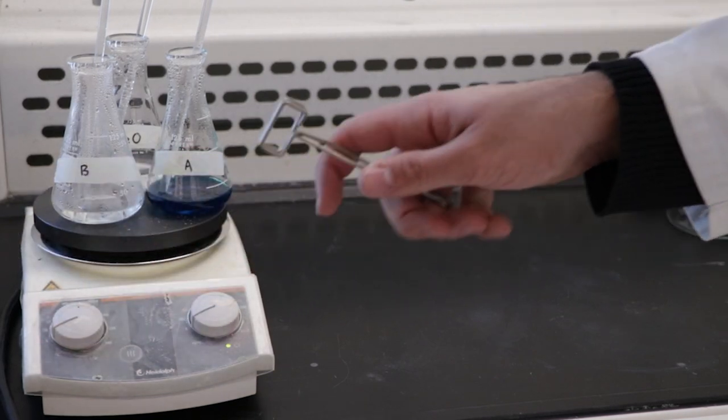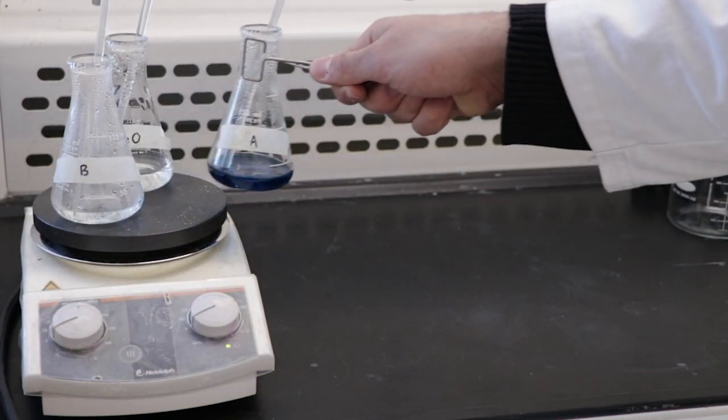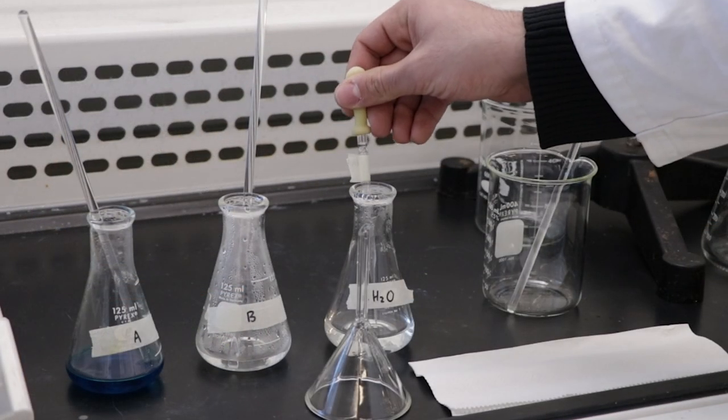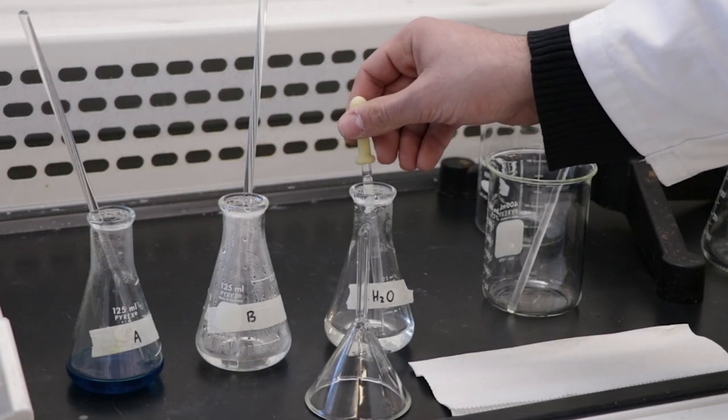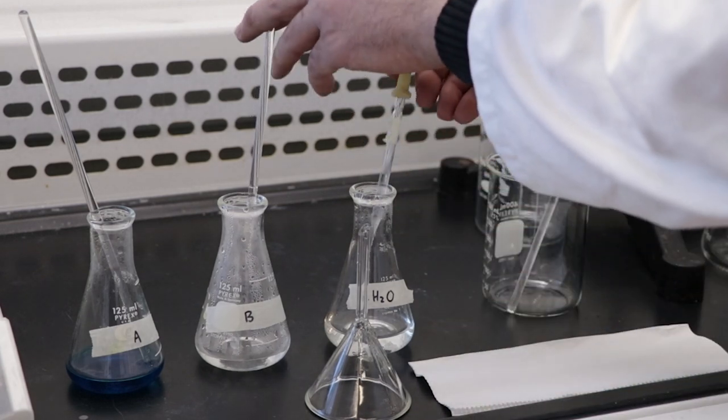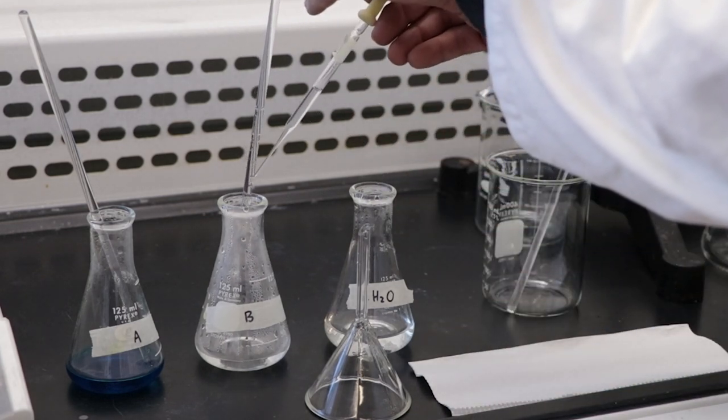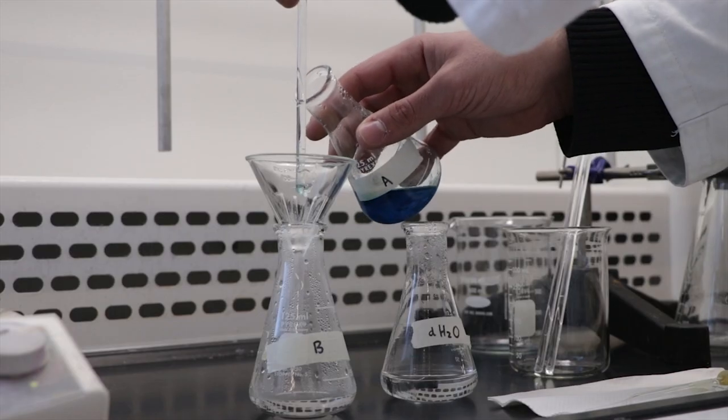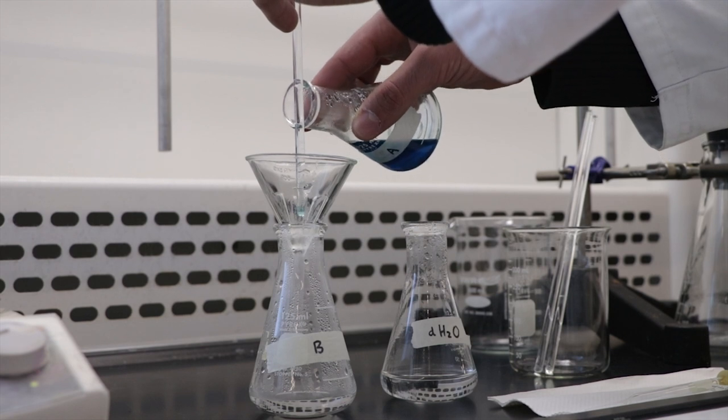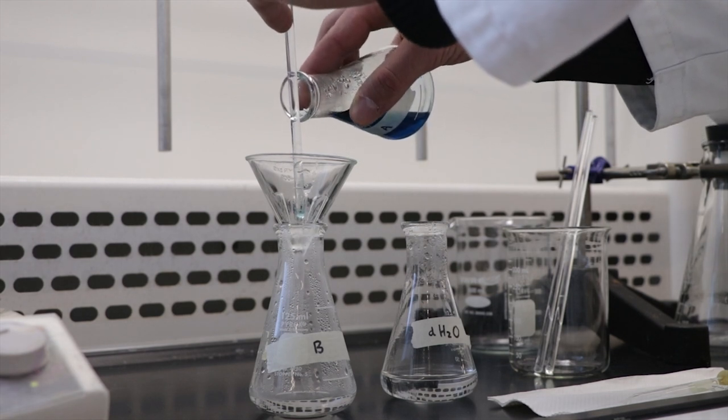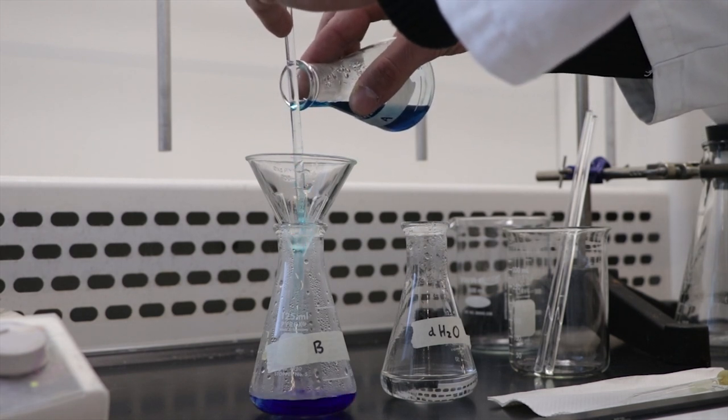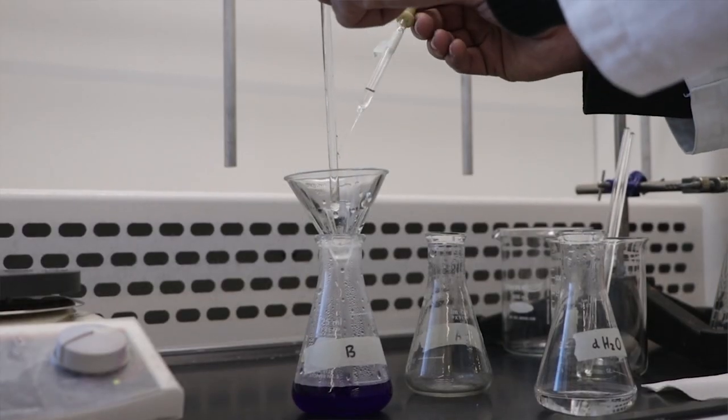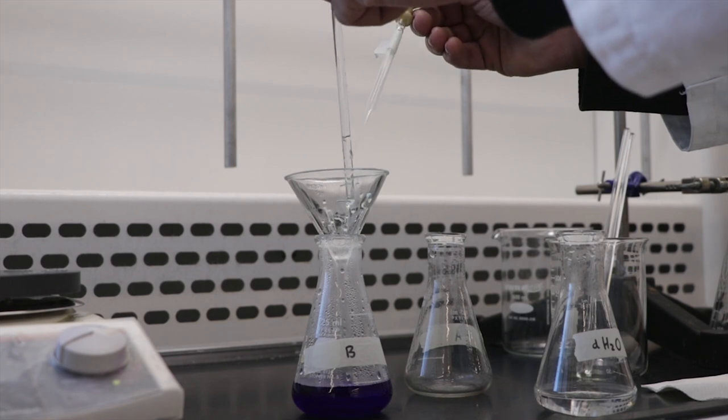Once they have dissolved, remove the flasks from the hot plate. While the solutions are still warm, quantitatively transfer the contents of flask A into flask B. Before removing the glass rod from flask B, rinse it into the flask to ensure that no reactants are lost. Use a minimum amount of warm distilled water to rinse out any remaining solution from flask A into flask B. Remember to rinse the glass rod from flask A and the funnel to ensure complete transfer.